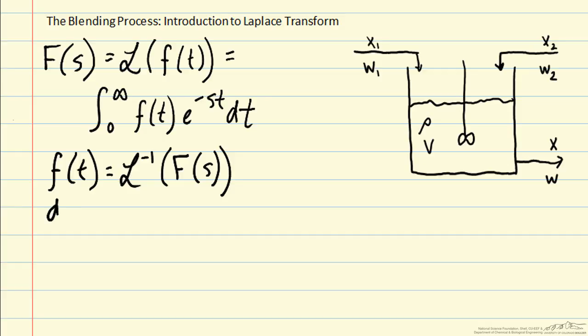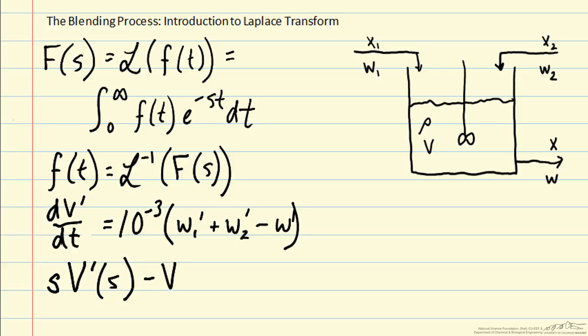So let's see how this works for our dynamic model for deviation of volume in the tank, deviation from v bar, our steady state value. So previously we had calculated this model. If we look up the Laplace transform of the derivative in our Laplace table, we get that it's s times v prime of s minus v prime of zero, our initial deviation. Then we can also take the Laplace transform of the right side of the equation.